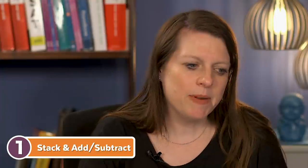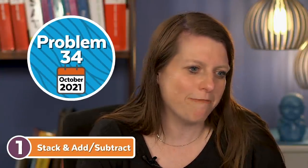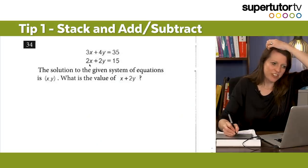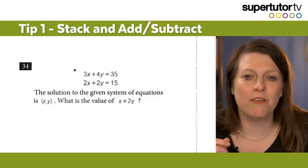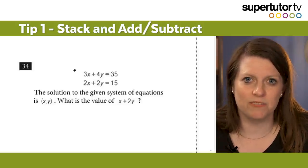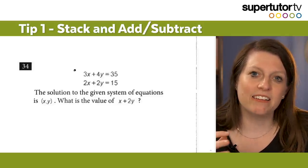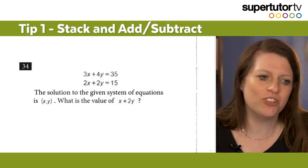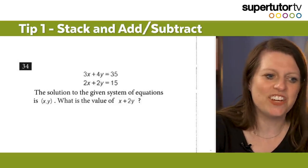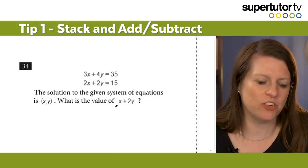I'm going to be doing problem number 34 from the October 2021 exam. So if you were planning to do that for practice, go do it and then come back. Here I have a system of equations with two unknowns — X and Y. The majority of the time when the SAT asks system of equations questions, if you can stack the two equations and add or subtract them together, you can sometimes get to the solution in a shortcut kind of manner. And that's what I'm going to show you.